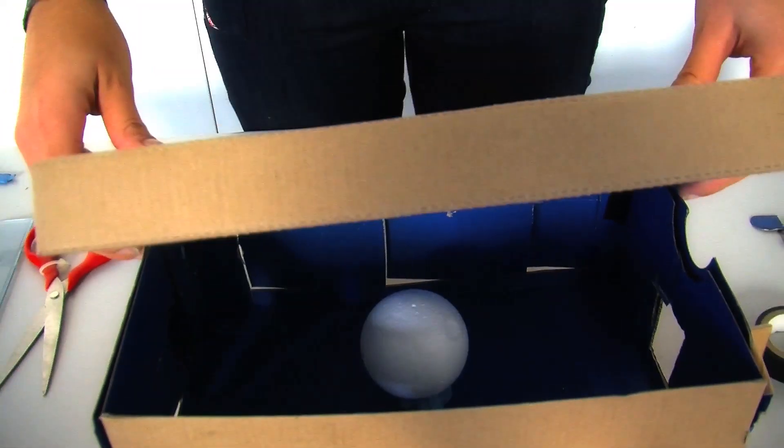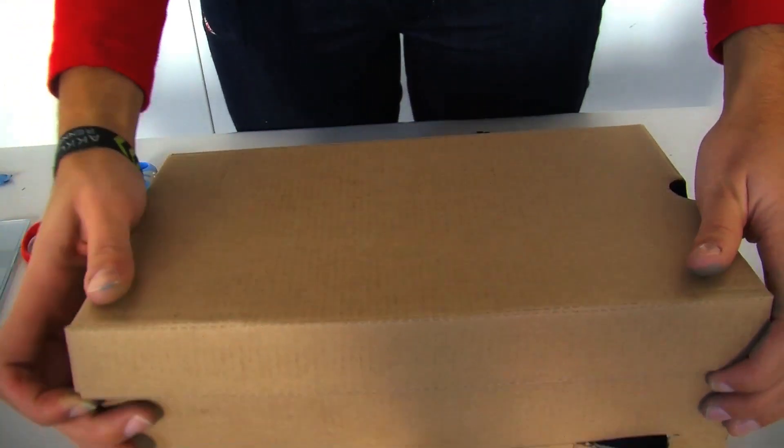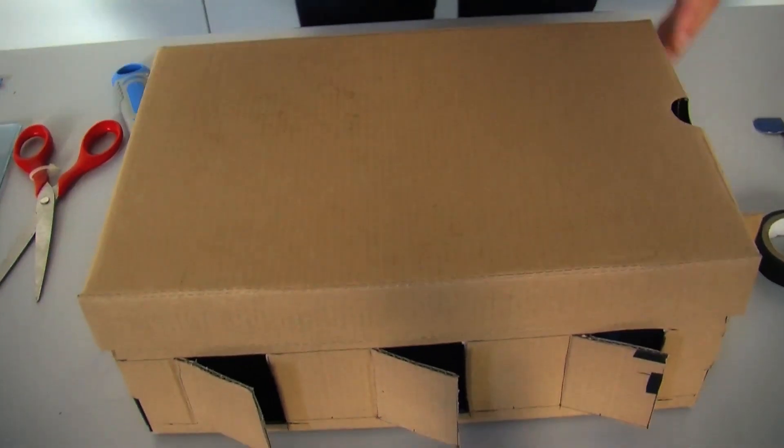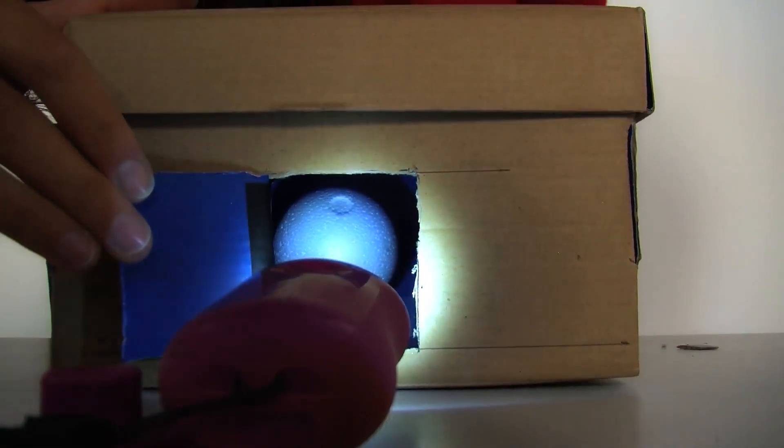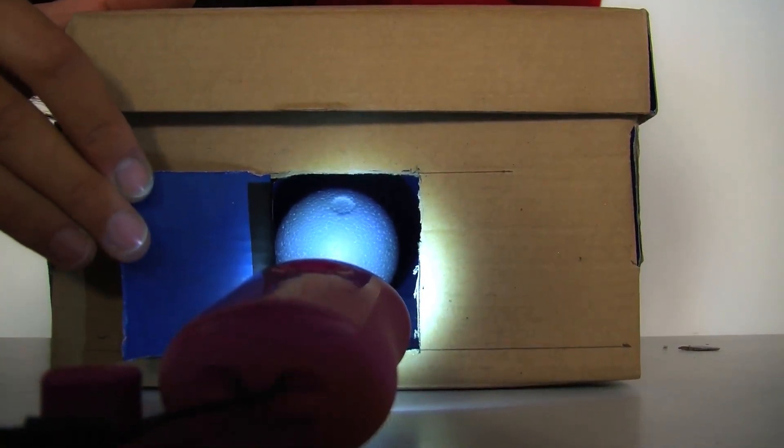When you're finished, close the lid. Position the torch on one of the two holes in the middle of one of the short sides so that it lights up the moon in the box.